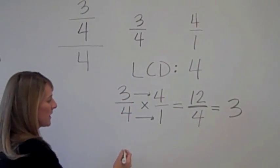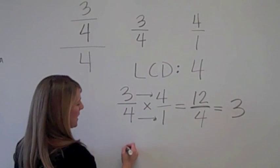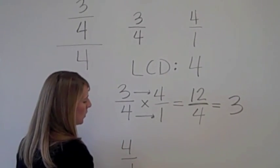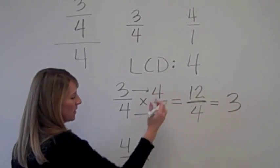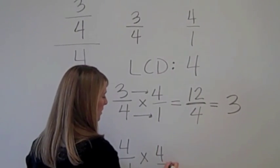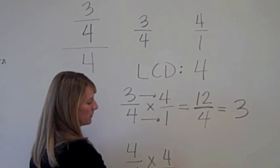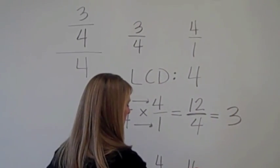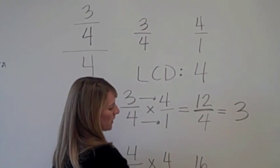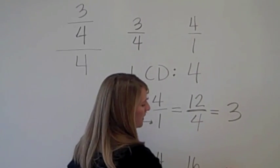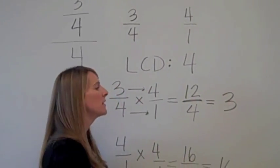Then you do the same thing with the denominator. 4 over 1 times the least common denominator, which is 4 over 1. 4 times 4 is 16. 1 times 1 is 1. And simplify, it's just 16.